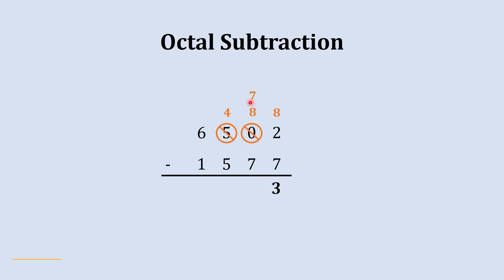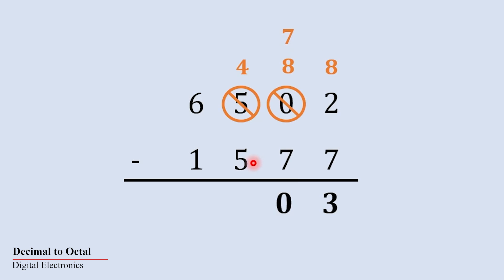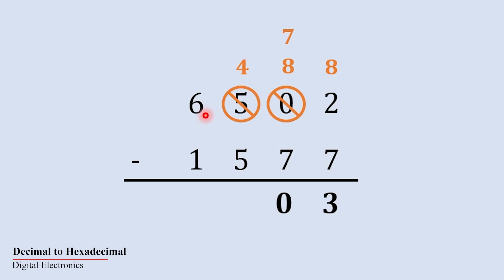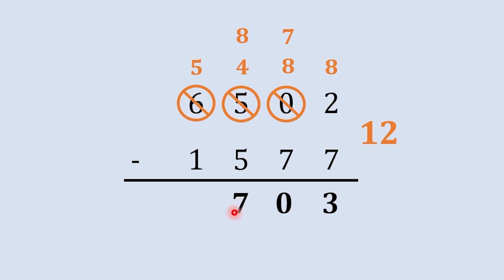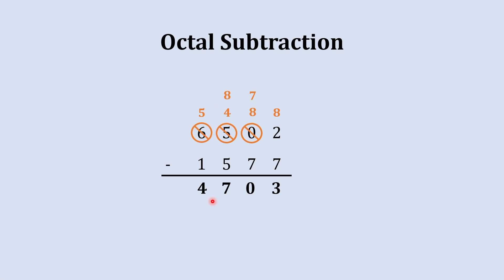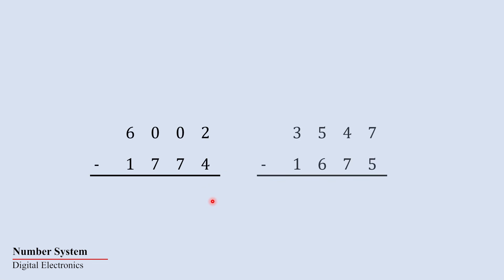Jumping to the next column: we have 7, and previously 7 was left there, so 7 minus 7 gives 0. Then the next column: we try to subtract 5 from 4 — not possible. So this column asks for a borrow from the next column. That 6 gives a borrow: it becomes 8 here and 5 is left. So 8 plus 4 is 12, and 12 minus 5 gives 7. In the final column: 1 minus 5 gives 4. So the final octal subtraction result is 4703.